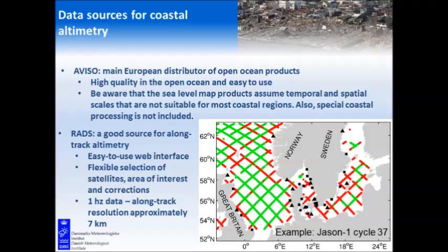That's not quite where we are. There is the open ocean altimetry product, and one of the main providers — probably the most used — is Aviso. They have a high-quality product for the open ocean that is quite easy to download and use. It's a 2D map, but when they do the interpolation they assume something about temporal and spatial scales that is not suitable for most coastal regions.